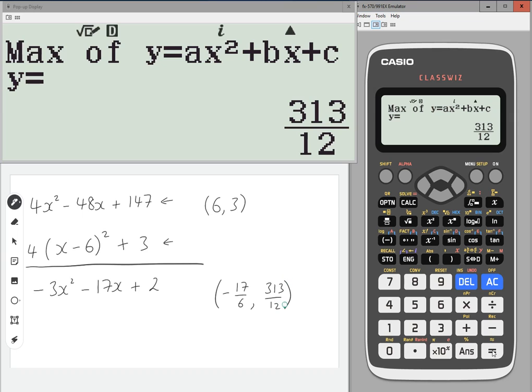So this is the coordinates of the vertex. So that means that this quadratic in completed square form must be of the form (x + 17/6)² + 313/12.